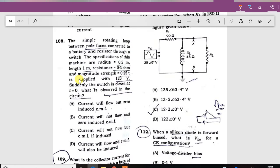A simple rotating loop between the pole force phase connected to the battery through a switch. The specification of this machine: radius equals 0.5 meter, length 1 meter, resistance 0.3 ohm, magnetic strength 0.25 volt, supplied with 120 volt. When switch closes at t equals 0, the current will flow and EMF will also be induced.